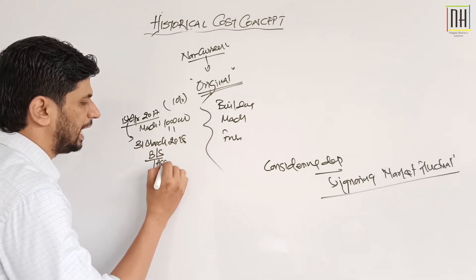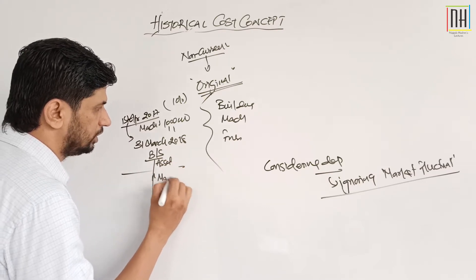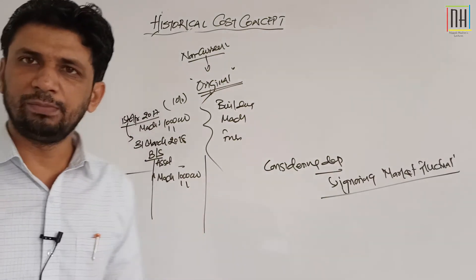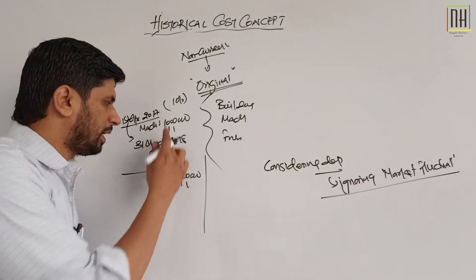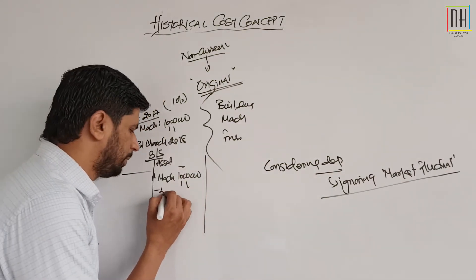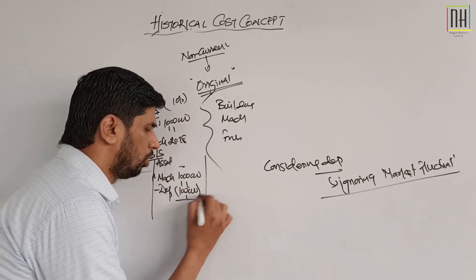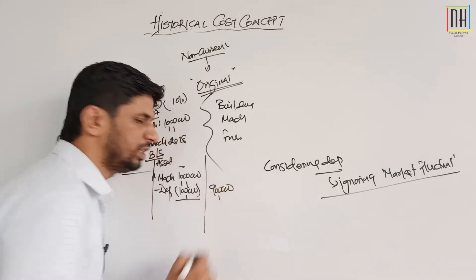After one year, on 31st March 2018, we are preparing a balance sheet. Under assets side, we will disclose this value of machine - machine of rupees 10 lakhs. Ek saal ho chuka hai, to ek saal ka depreciation laga denge. 10 lakh ka 10 percent is 1 lakh rupees.